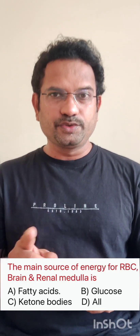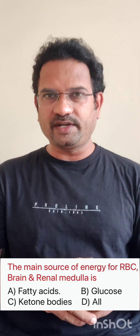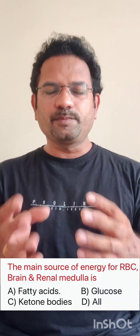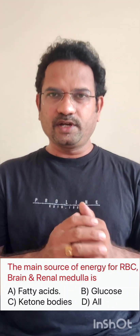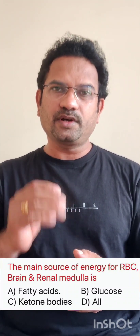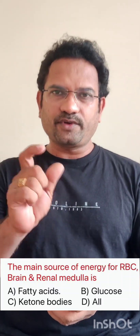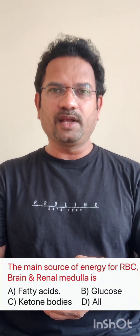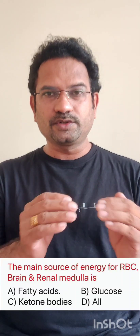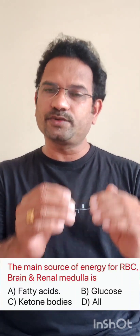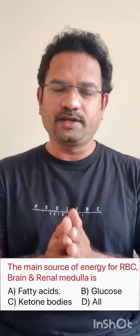Coming to the brain, brain uses glucose regularly to get energy, not free fatty acids. During starvation it may use ketone bodies, but the regular source of energy is glucose. Coming to the renal medulla, renal medulla is always in a hypoxic condition — low levels of oxygen will be there. So glycolysis occurs even without oxygen. Hence the sole source of energy is glucose because glycolysis uses glucose. So the answer is option B, glucose.